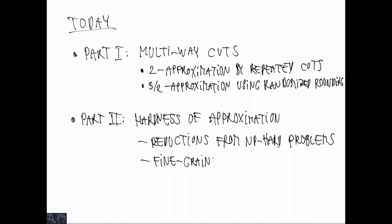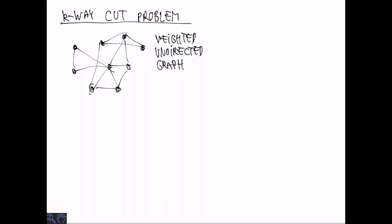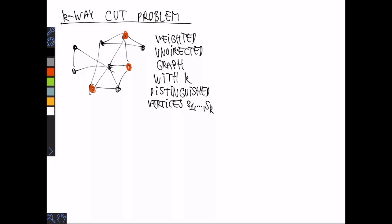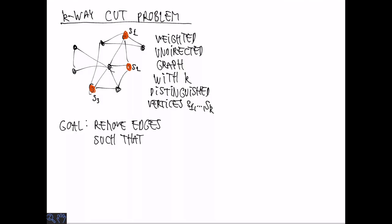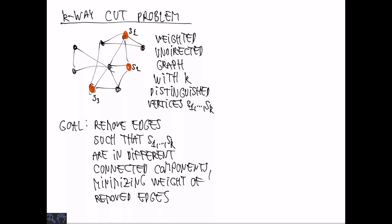We are going to see reductions from NP-hard problems and then have a look at fine-grained reductions. The k-way cut problem is defined on an undirected weighted graph with non-negative weights. There are k distinguished vertices named S1 through SK. The goal is to remove edges that disconnect these vertices from each other. S1 through SK need to be in different connected components after removing these edges.